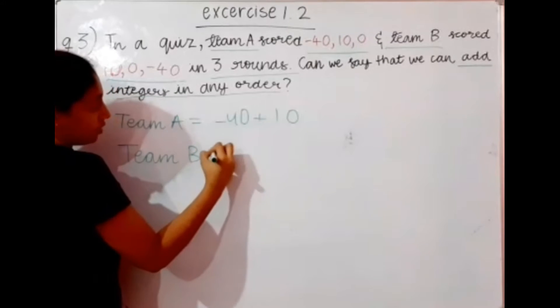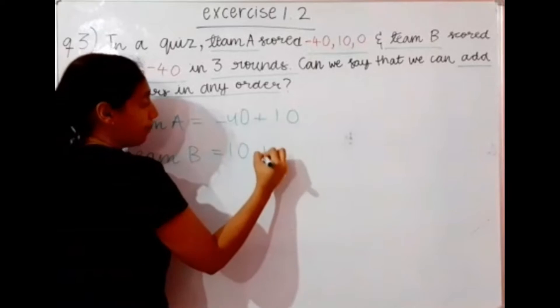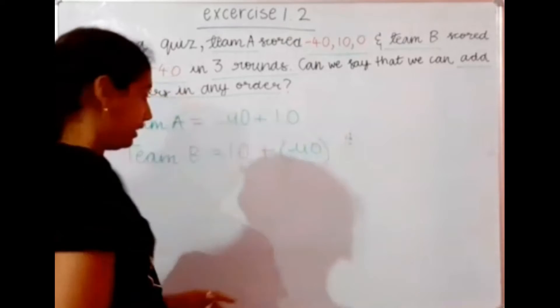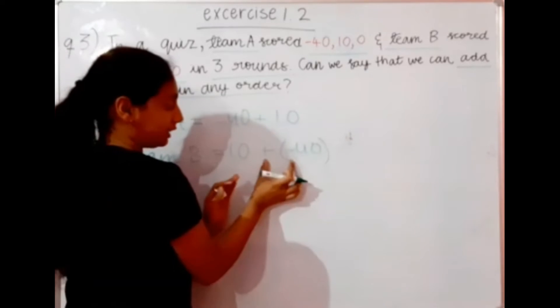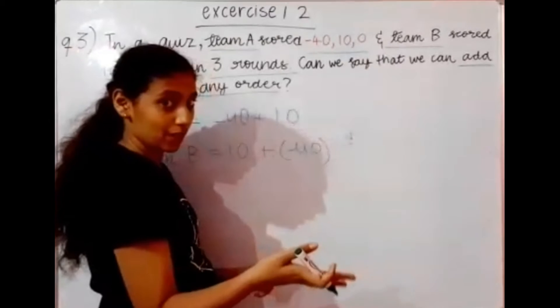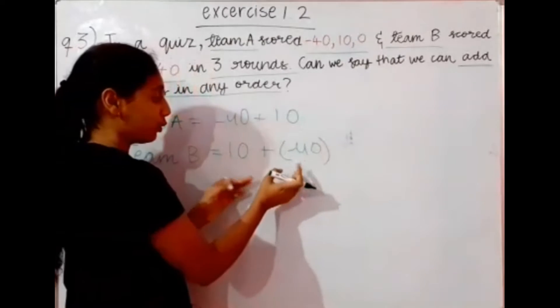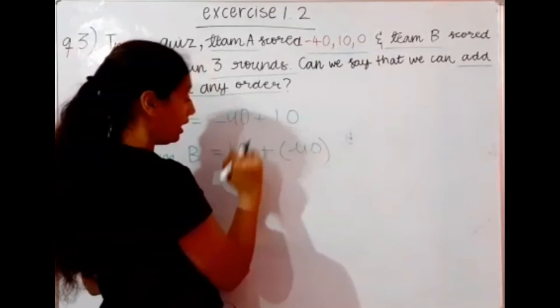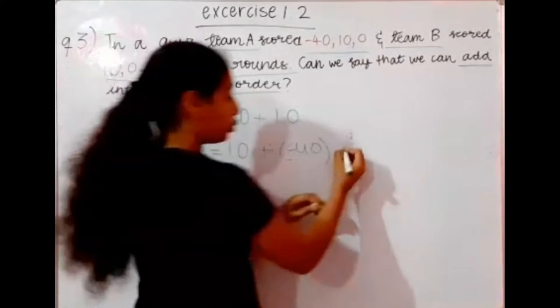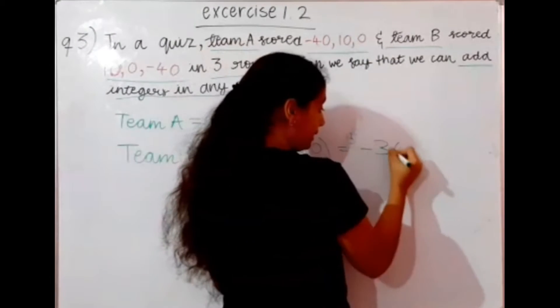And then we write, team B scored 10 plus minus 40. Now, over here, when the brackets will open, this will become minus. Now 10 minus 40, so what will happen is, you will subtract 40 minus 10, that's 30, and that will go to the negative side, so it will become minus 30.